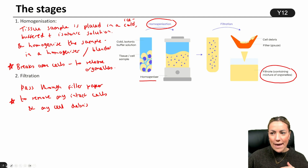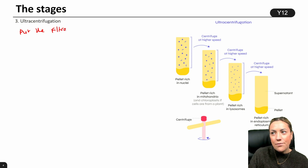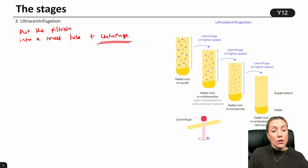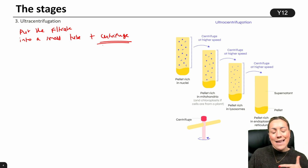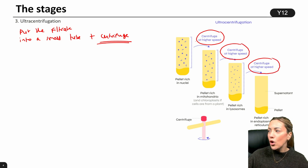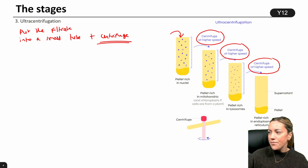You've got your mixture of organelles, now you're going to centrifuge it. You put the filtrate — your mixture of organelles — into a small tube and centrifuge. A centrifuge is basically a machine that spins this tube. We're going to spin it at increasing speeds, and the centrifugal force is going to help us separate these organelles. You need to centrifuge at a higher speed each time you repeat the process. Pour your filtrate into your first centrifuge tube and spin it on a lower speed to start with.